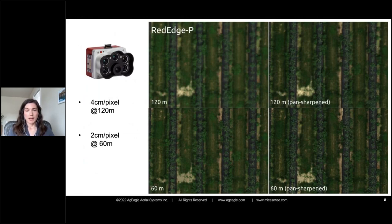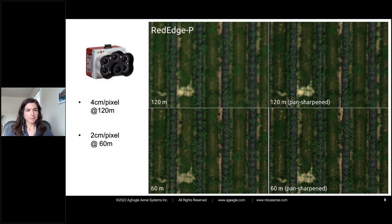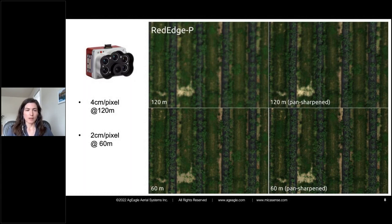We recently flew a new dataset with our Red Edge P sensor over a blueberry field in Washington at two different altitudes, to show visually what the doubled resolution looks like over previous models. At 120 meters, the left-hand image shows the multispectral output, and the right-hand side shows the multispectral once it's pan-sharpened. The panchromatic band has a much higher resolution than the multispectral and is used to pan-sharpen to that higher resolution — a method used in satellite imagery now being brought to the drone level.